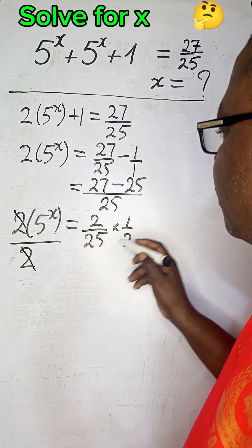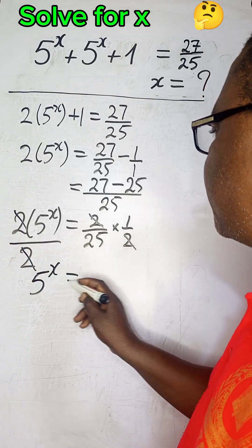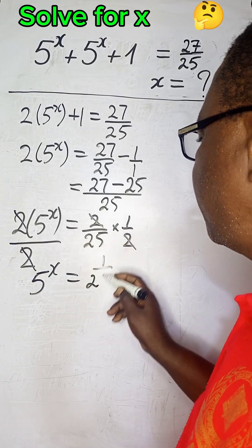We can see the 2 is gone. Here, we can see this cancels off. So, we have 5^x = 1/25.